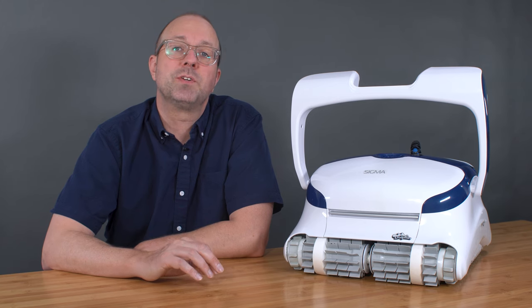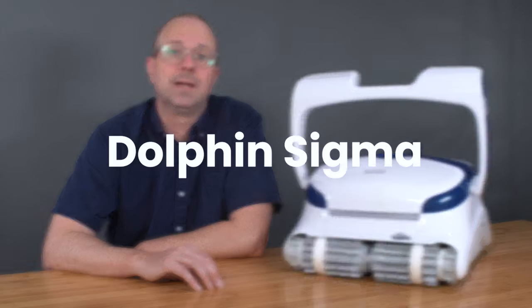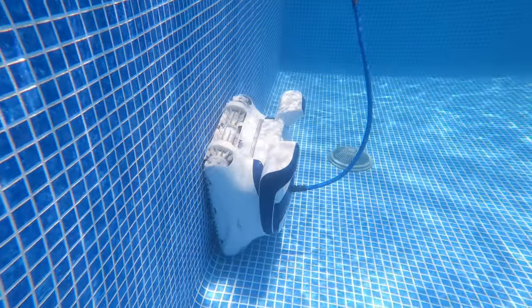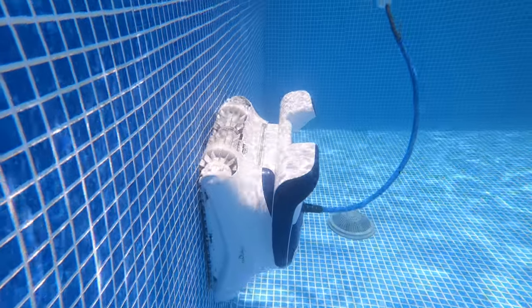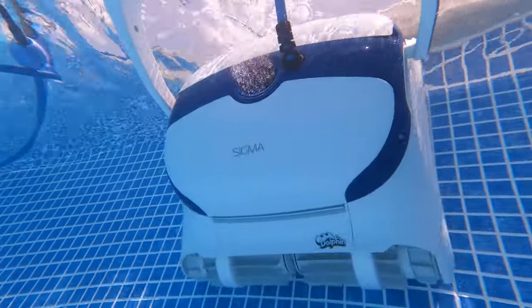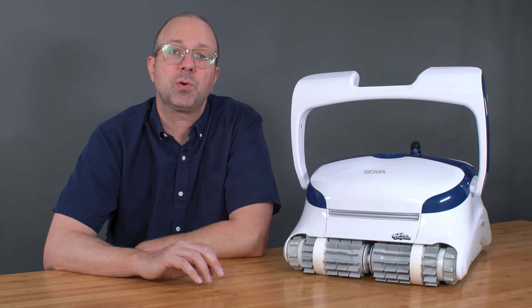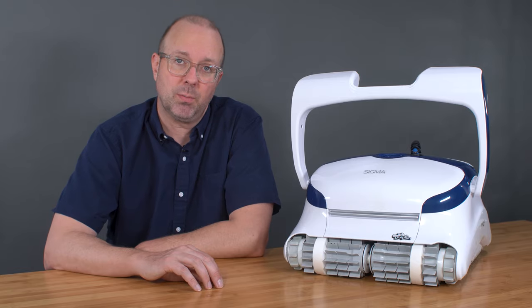Coming in as one of Dolphin's most advanced robots ever, and the top ProLine robot, is the Dolphin Sigma. The Sigma is designed to clean pools up to 50 feet, produces over 4,500 gallons per hour, and can scrub everything from the floor to the waterline thanks to the triple-commercial-grade motors and gyroscope.